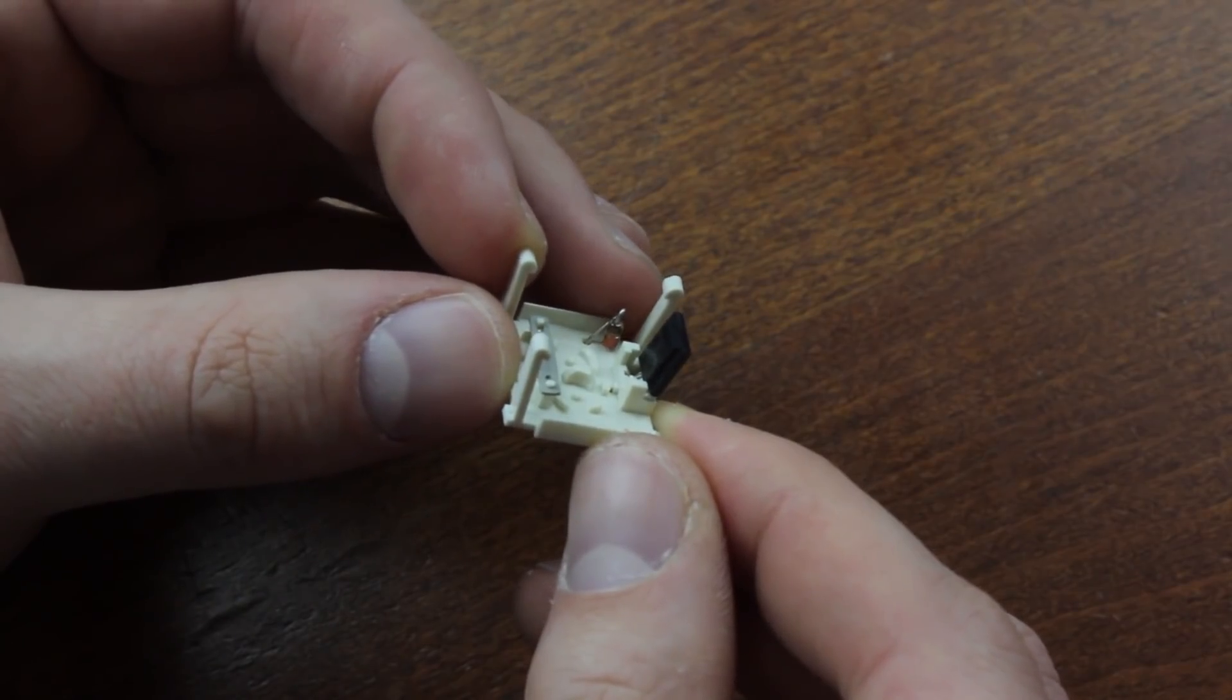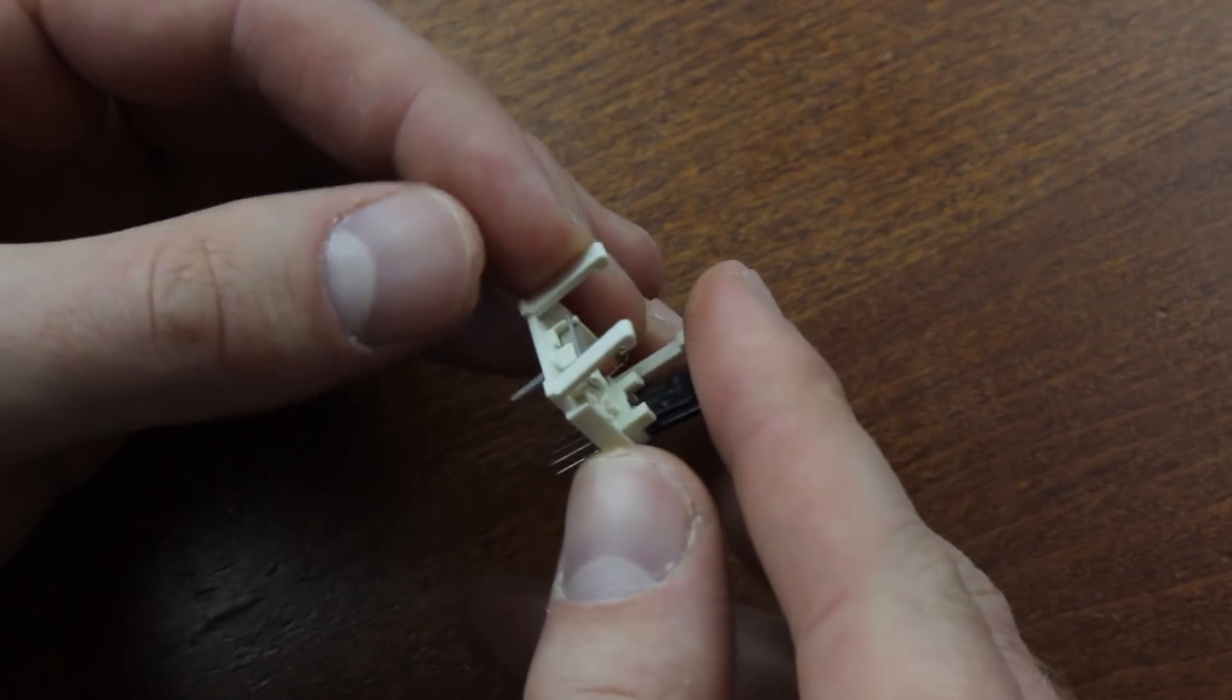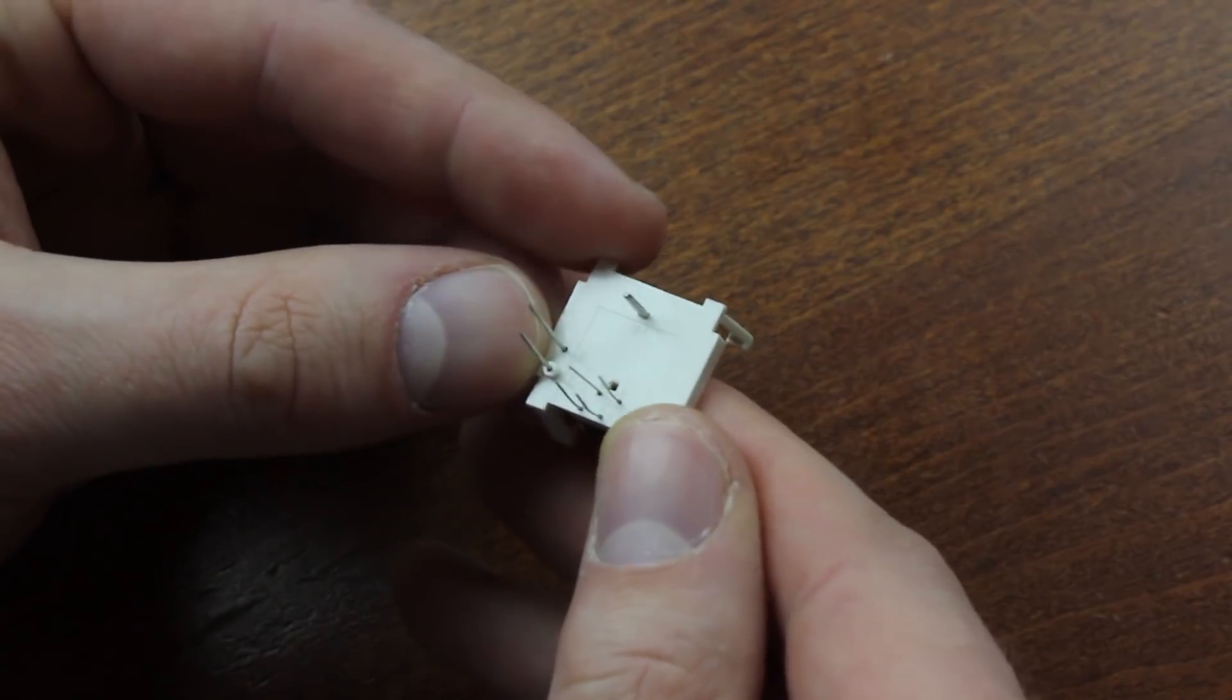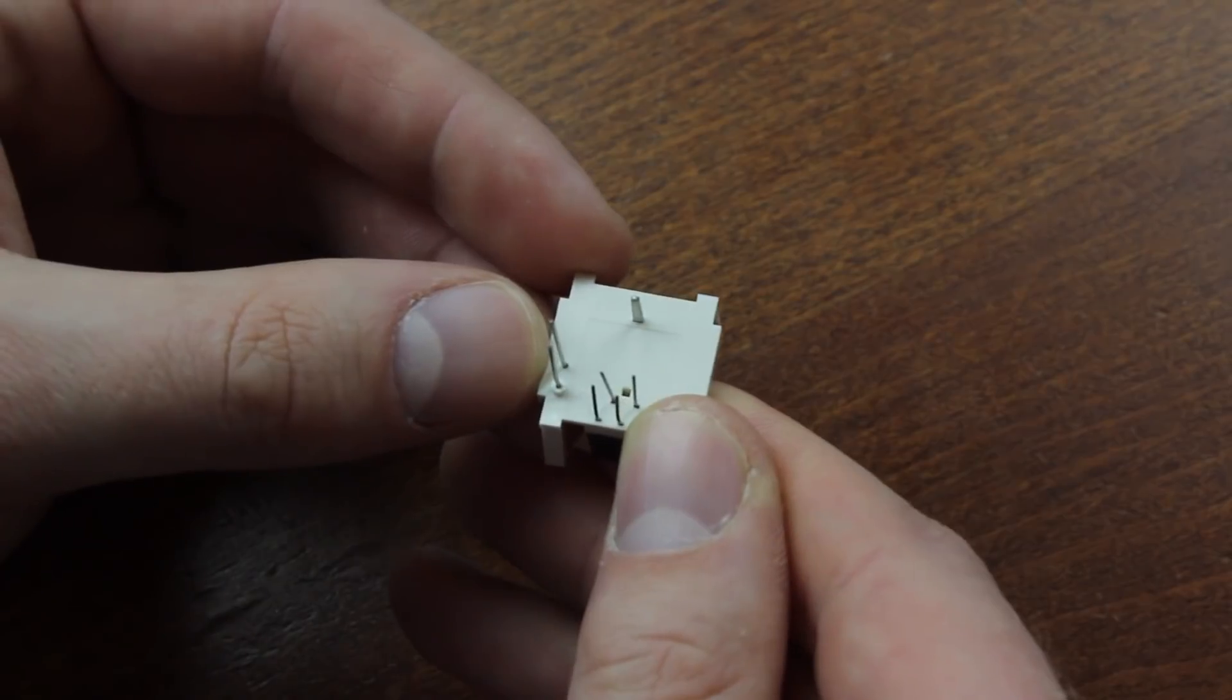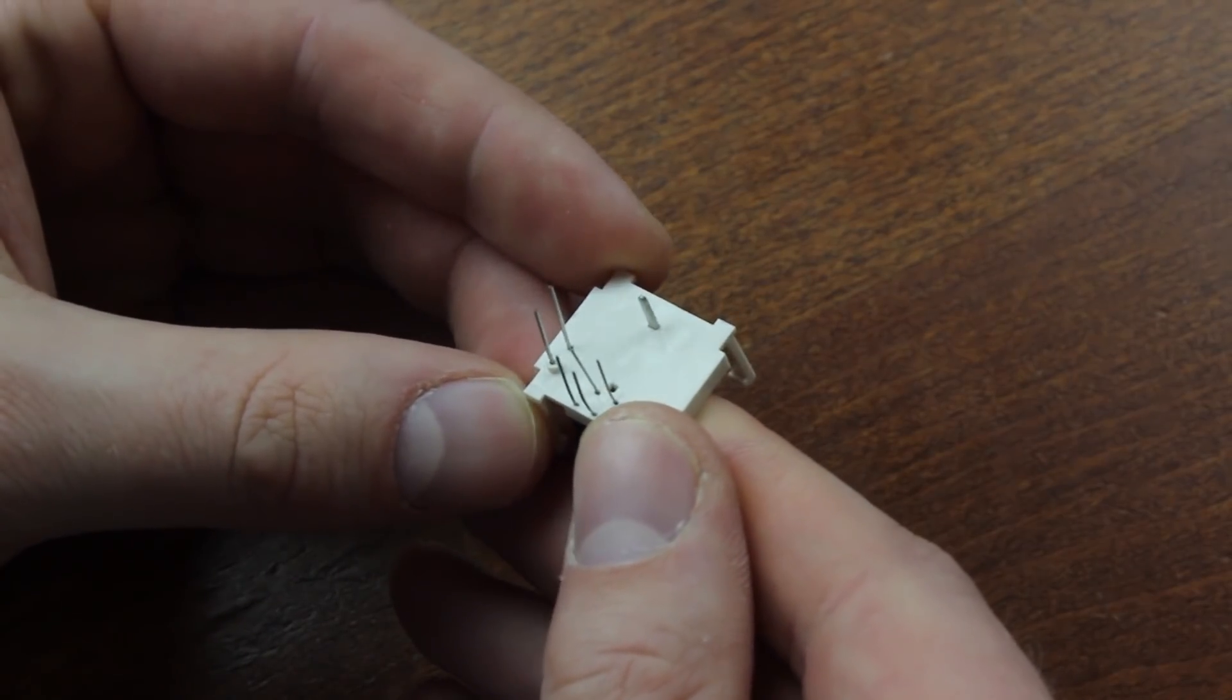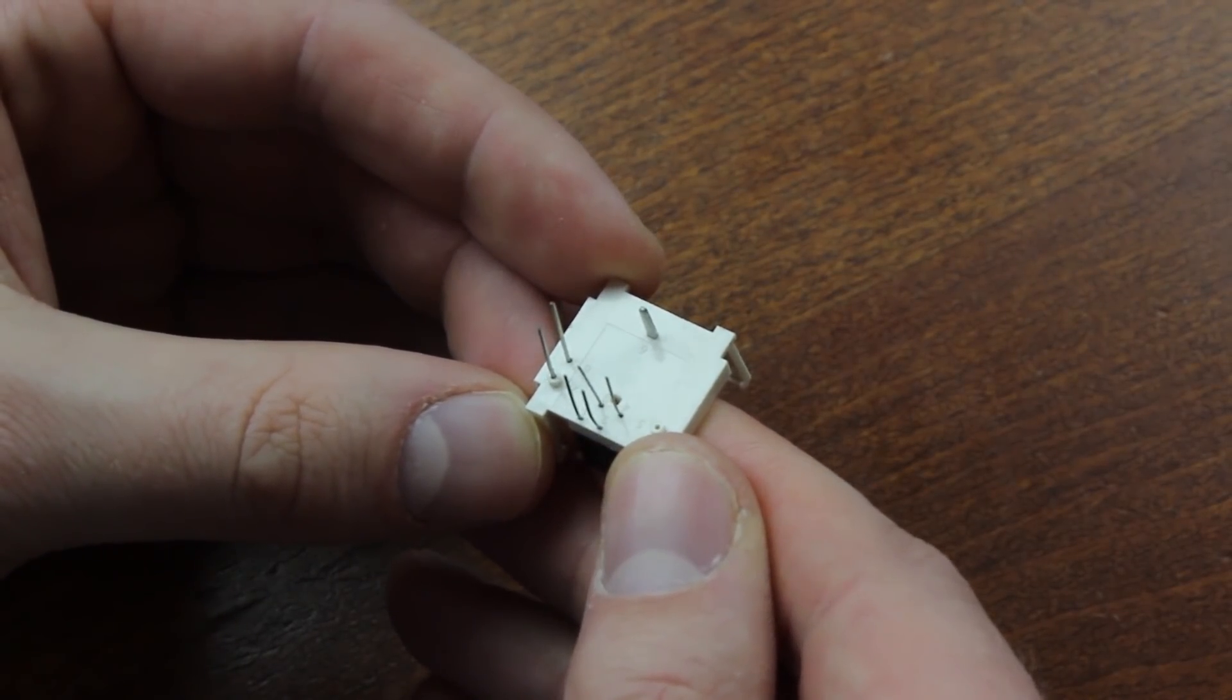There is also a small diode in there for two more contacts and a fixing pin for a total of seven pins, which is quite a lot for a single switch. In a 101 key keyboard, that's 707 solder points just for the switches.